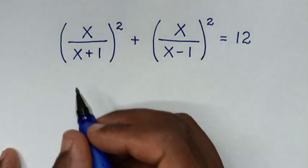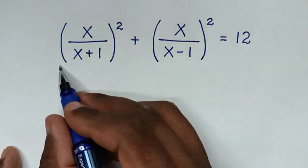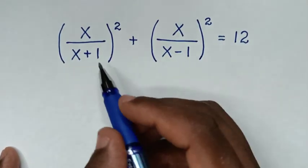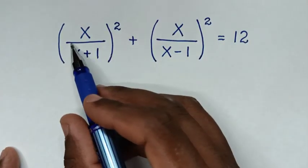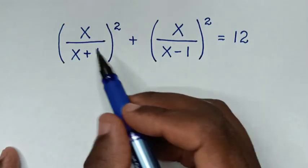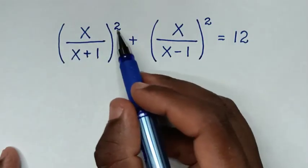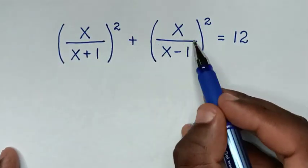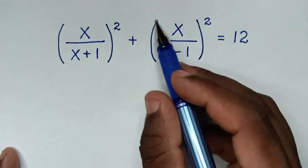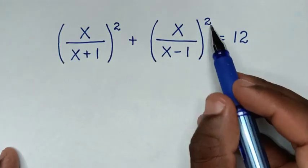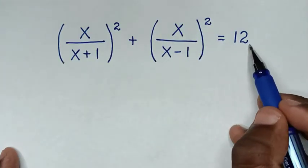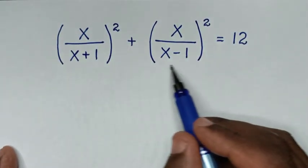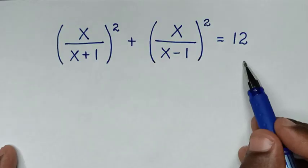Hello, you are welcome to solve this math problem which is (x/(x+1))² + (x/(x-1))² = 12. We need to find the values of x from this equation.